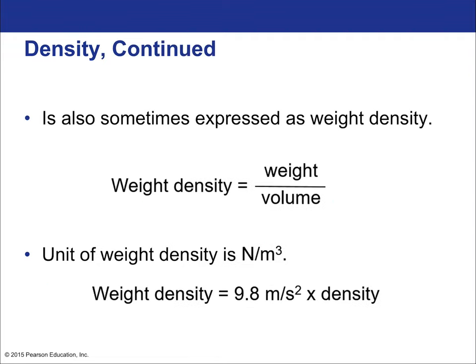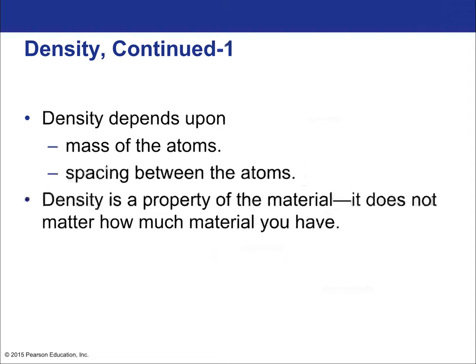Density depends on the mass of the atoms and the spacing between them. Fundamentally, that's why water has a density of 1000 kilograms per cubic meter, while mercury has a density of about 14,000 kilograms per cubic meter.